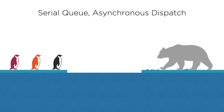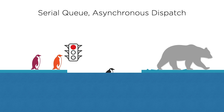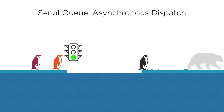Case two: submitting a task asynchronously to a serial queue. After submitting the task, the client's code continues executing. The serial queue executes the task and won't start other tasks before the current one finishes. The task finishes eventually.